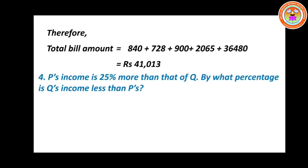Now let us move on to problem number 4. P's income is 25% more than that of Q. By what percentage is Q's income less than P's? So you have to find the percentage by which Q's income is less than P's.